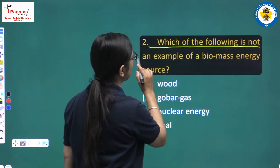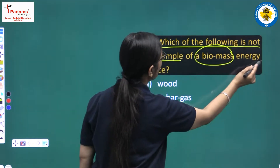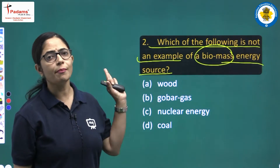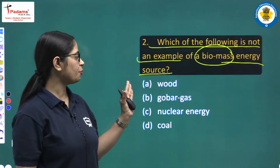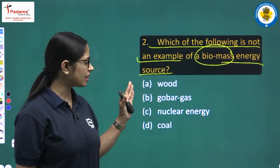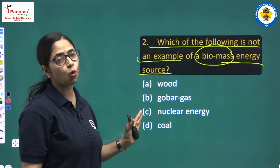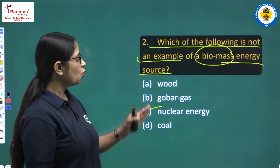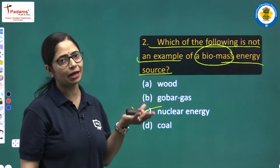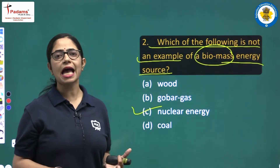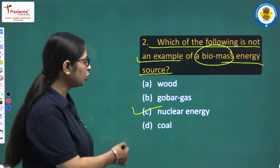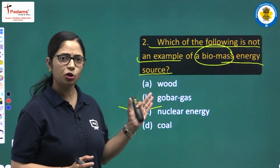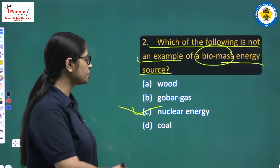Question number 2: Which of the following is not an example of a biomass energy source? Option A: wood, Option B: gobar gas, Option C: nuclear energy, Option D: coal. The answer is Option C, nuclear energy, because wood, gobar gas, and coal are plant or animal products — that is biomass. Nuclear energy is obtained from nuclear fission, so it is not biomass.